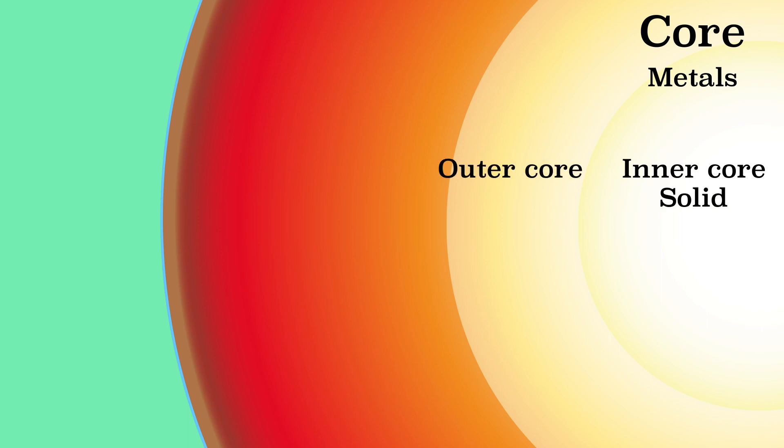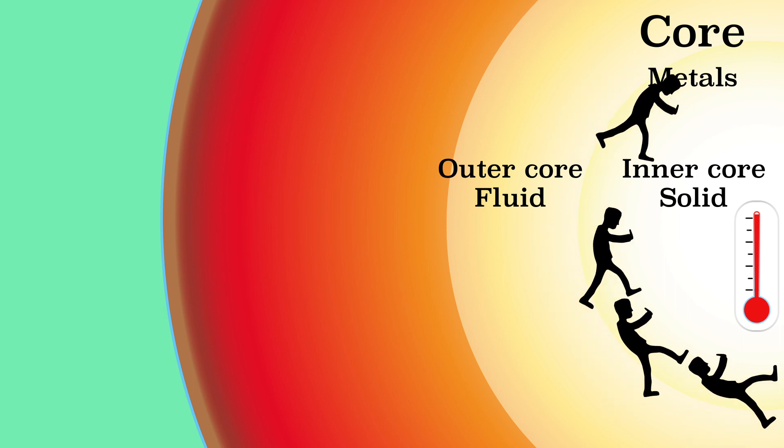To understand how this heat leads to plate tectonics we must first look at the structure of the Earth. Let's start with the inner part of the Earth. This is called the core and consists mainly of metals. The inner core is solid while the outer core is liquid. Although the temperature in the inner core is higher than in the outer core, the pressure is also a lot higher, so that the inner core is solid and the outer core is fluid.